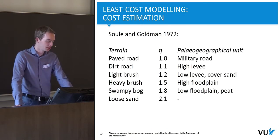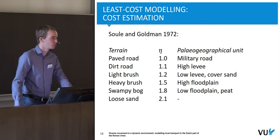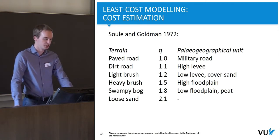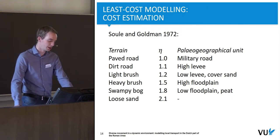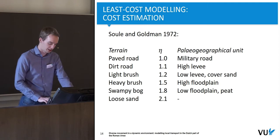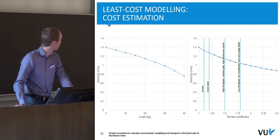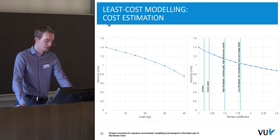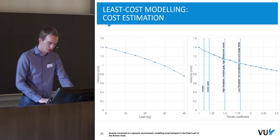We don't have to come up with terrain coefficient numbers ourselves because that research has already been done. It's not a one-to-one conversion since the original data relates more to vegetation and hydrology whereas paleogeography is more about morphology and hydrology, but I've tried to make the best conversion possible. In the left-hand graph, velocity is shown versus carried load — obviously when you carry more, your velocity decreases. In the right-hand graph, velocity is shown versus terrain coefficient — obviously when you traverse more difficult terrain, you travel more slowly.